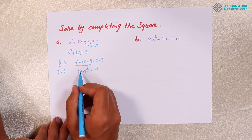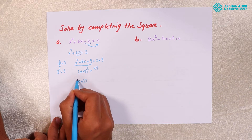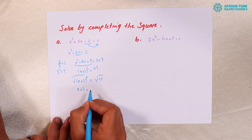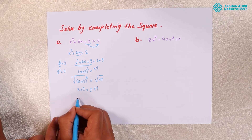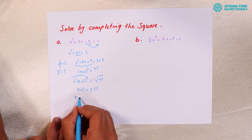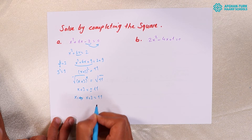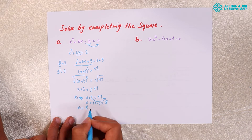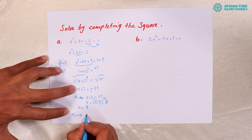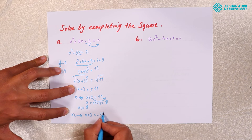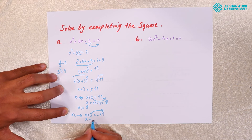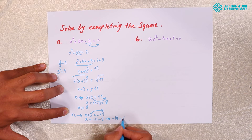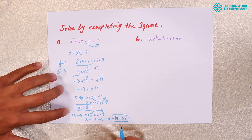To find X, take the square root of each side: X plus 3 equals plus or minus the square root of 11. For X1: X plus 3 equals positive square root of 11, so X equals square root of 11 minus 3, giving X1 equals square root of 11 minus 3. For X2: X plus 3 equals negative square root of 11, so X equals negative square root of 11 minus 3, giving X2 equals negative square root of 11 minus 3.